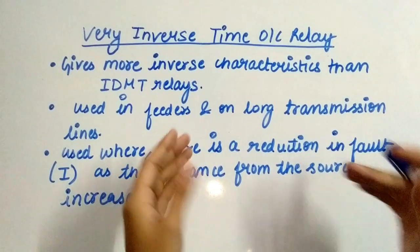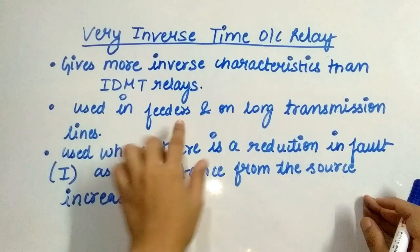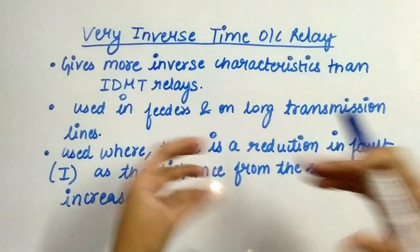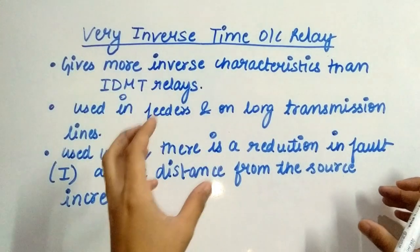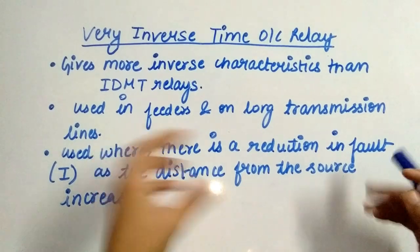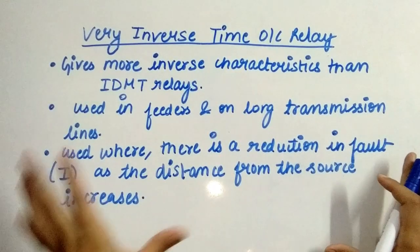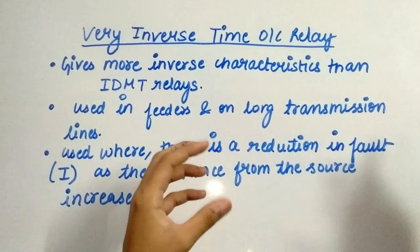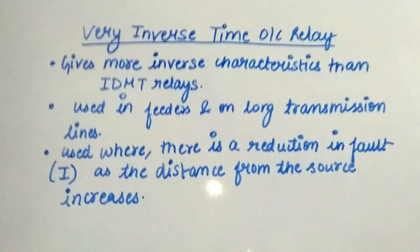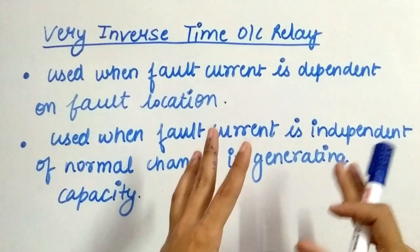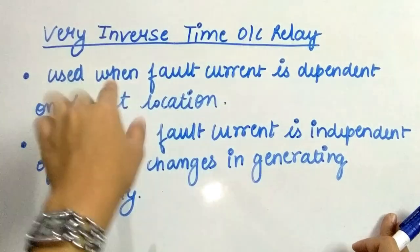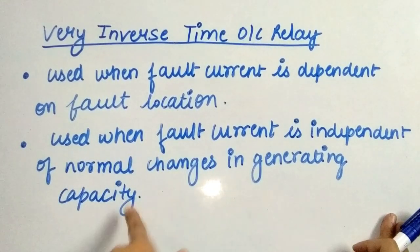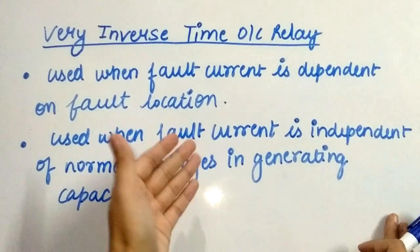Very inverse overcurrent relays provide more inverse characteristics than IDMT relays. They are used in feeders and on long transmission lines, particularly where there is a reduction in fault current due to increasing distance from the source. They are particularly suitable if the short circuit current drops rapidly with the increase in distance from the substation. Very inverse time overcurrent relays are used when the fault current is dependent on the fault location, and when the fault current is independent of normal changes in generating capacity.